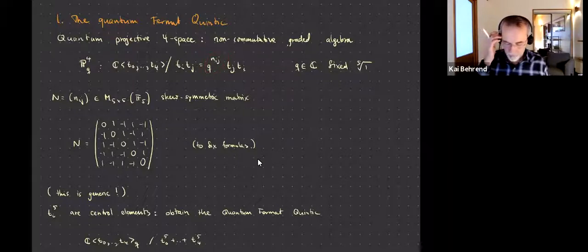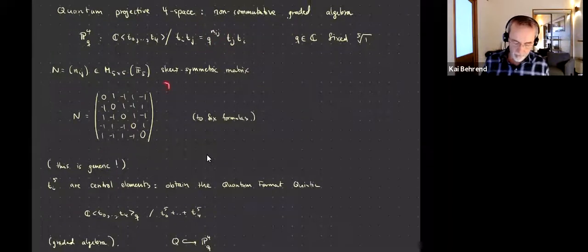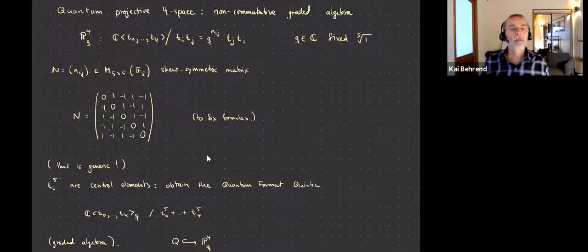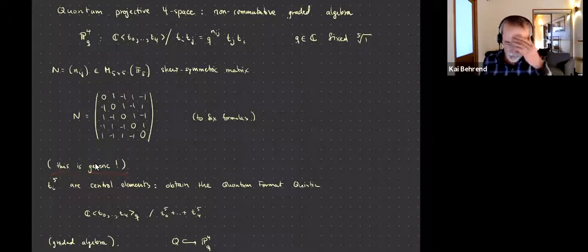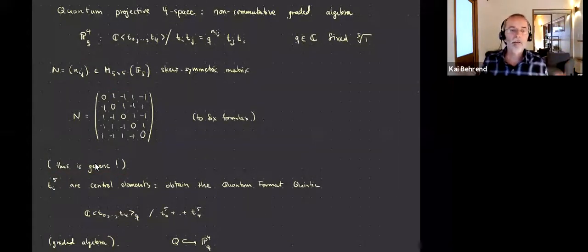So these coordinates commute up to fifth roots of unity. There's a matrix that determines the commutation — a five-by-five matrix with coefficients in the field of five elements, and here is an example of such a matrix. It has to be skew-symmetric. And I should make the remark that even though it looks really special, in some sense it's generic — you can do certain kinds of simple operations to the situation and transform anything into this situation.